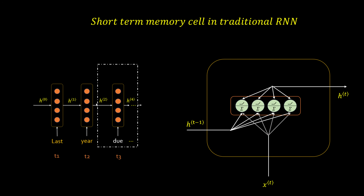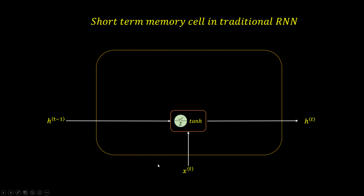Going back to our short-term memory cell in traditional RNN — I have drawn the vertical neurons here, but you can draw them in a horizontal fashion as well; it's just a layer of neurons. Your xt and ht are vectors. When you have a word, you first convert it into a vector — a vector is nothing but a list of numbers. Your hidden state will also be a vector. Using both these vectors, you do a weighted multiplication, then apply the activation function tanh, and you get a new hidden state. This is how the short-term memory cell looks in traditional RNN.